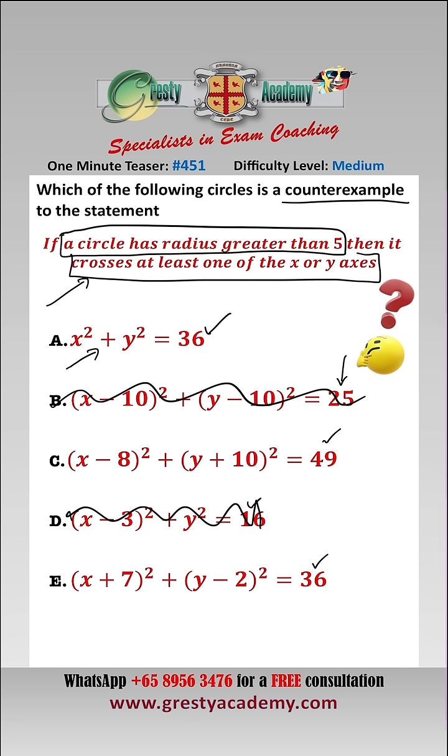For C, we have that the radius is 7 and it's 8 away from the x-axis and 10 away from the y-axis, so it doesn't cross either of the axes. So this is a counter example.